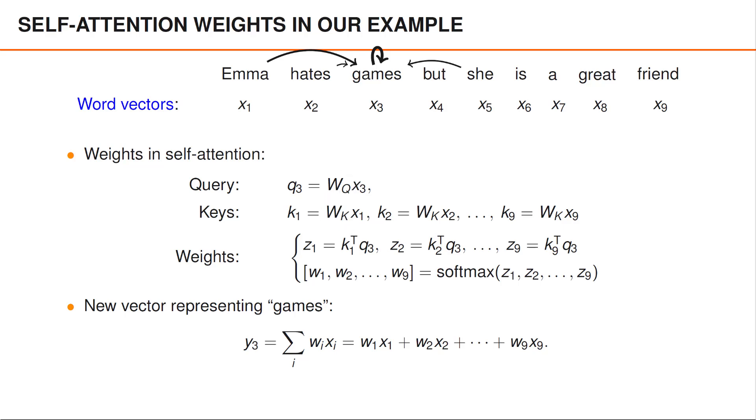We then compute Z values by taking the inner product between the query vector Q3 and the different key vectors K1 to K9.